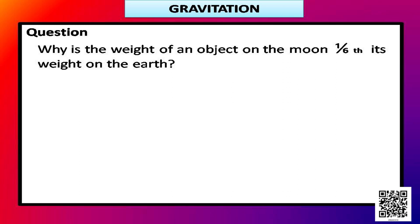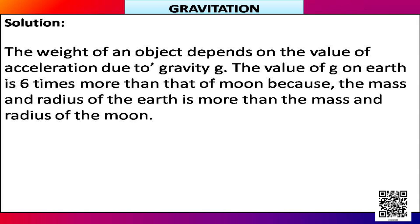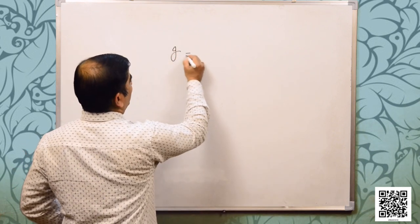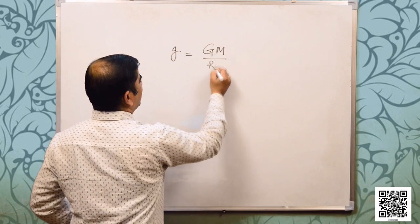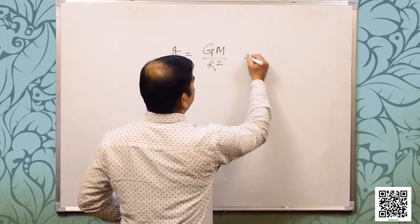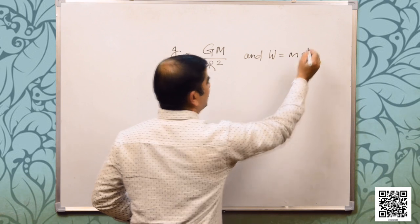The next question says: why is the weight of an object on the moon one-sixth its weight on the earth? The weight of an object depends on the value of acceleration due to gravity g. The value of g on earth is six times more than that of the moon because the mass and radius of the earth are more than those of the moon. We have acceleration due to gravity g = GM/R² and weight W = mass × g.